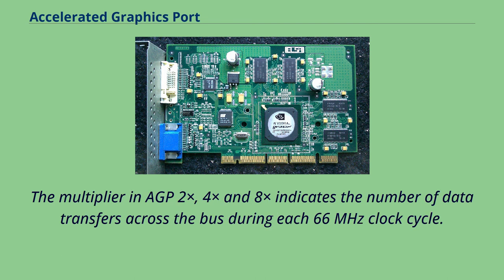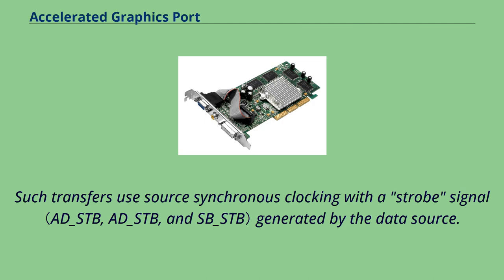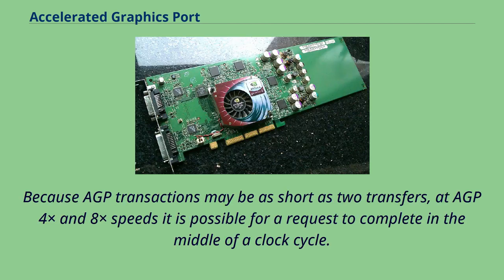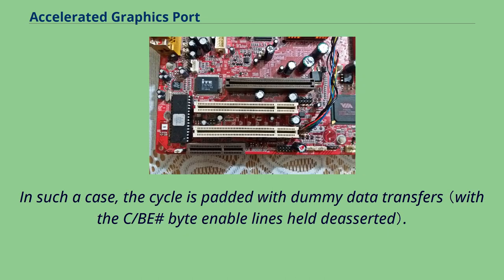The multiplier in AGP 2x, 4x, and 8x indicates the number of data transfers across the bus during each 66 MHz clock cycle. Such transfers use source-synchronous clocking with a strobe signal generated by the data source. AGP 4x adds complementary strobe signals. Because AGP transactions may be as short as two transfers, at AGP 4x and 8x speeds it is possible for a request to complete in the middle of a clock cycle; in such a case, the cycle is padded with dummy data transfers.